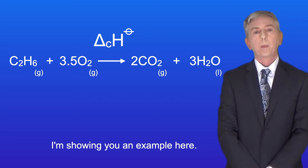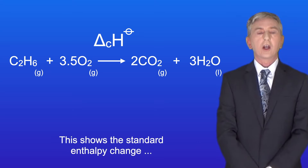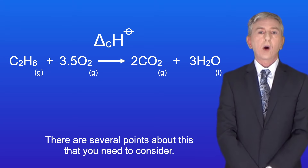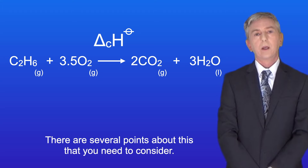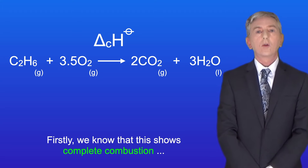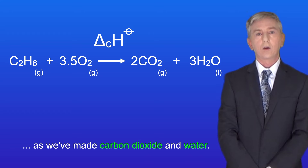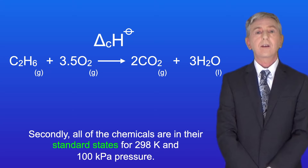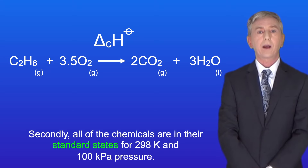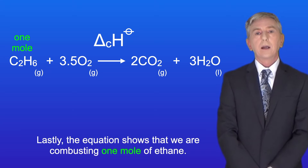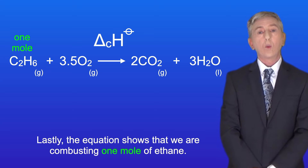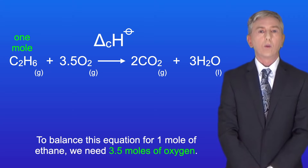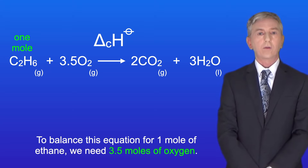I'm showing you an example here. This shows the standard enthalpy change for the complete combustion of the hydrocarbon ethane. There are several points to consider. Firstly, we know this shows complete combustion as we've made carbon dioxide and water. Secondly, all of the chemicals are in their standard states for 298 Kelvin and 100 kilopascals pressure. And lastly, the equation shows that we're combusting one mole of ethane. To balance this equation for one mole of ethane, we need 3.5 moles of oxygen.